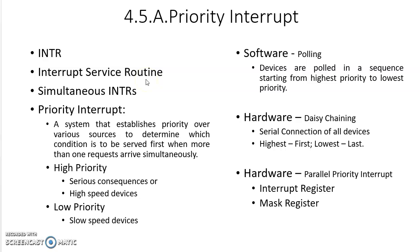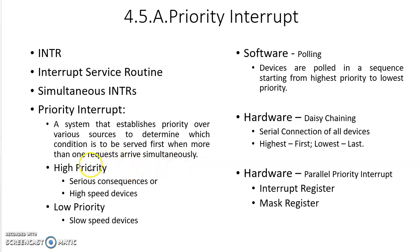Since there are many input-output devices connected to the computer CPU, there is a possibility of receiving simultaneous interrupt requests — more than one interrupt request. Then which interrupt request shall be serviced first will be decided by the priority interrupt concept. Priority interrupt is a system that establishes priority over various sources to determine which condition is to be served first when more than one request arrives simultaneously.